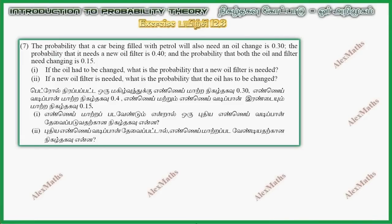Hi students, this is Alex here. XI 12.3, question number 7. The probability that a car being filled with petrol will also need an oil change is 0.30. This is event A — oil change. So P of A is 0.3.